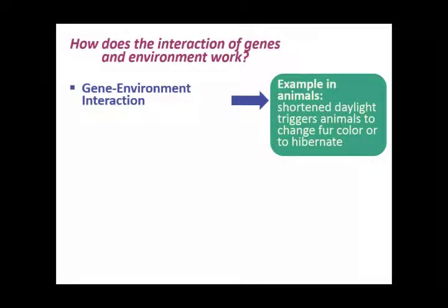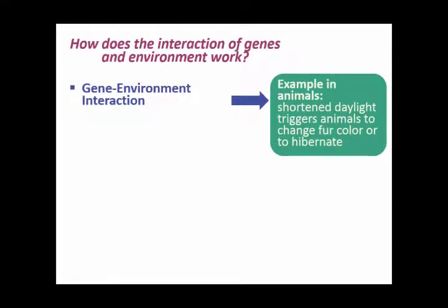If you were to take an animal who normally goes from brown in the summer to white in the winter and put them in a scenario where they're not experiencing the shortened days that normally trigger them to change their fur color, they'll stay brown all year. If you keep them on a winter cycle with short days and long nights all year long, they'll keep the white fur. The environment influences the way they express basic characteristics like fur or whether it's time to sleep or not.